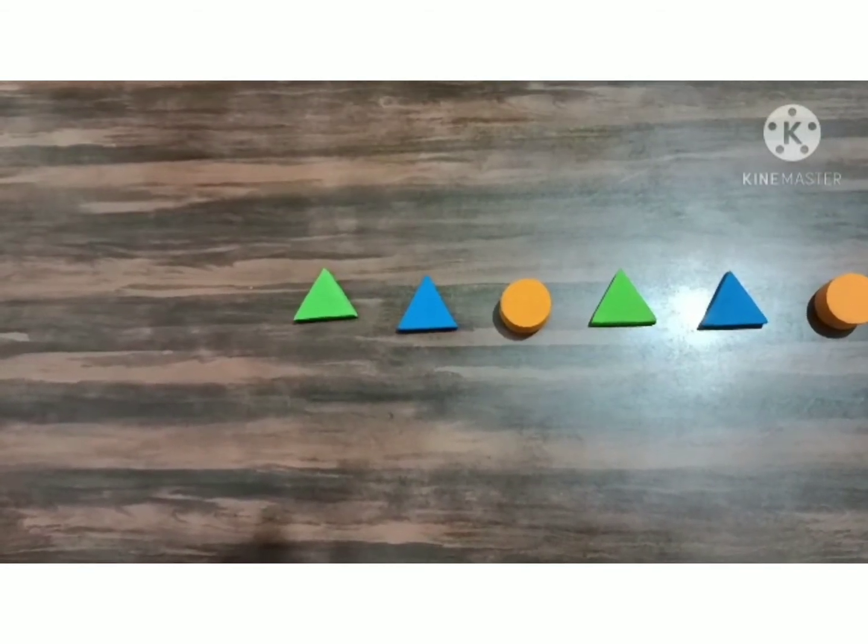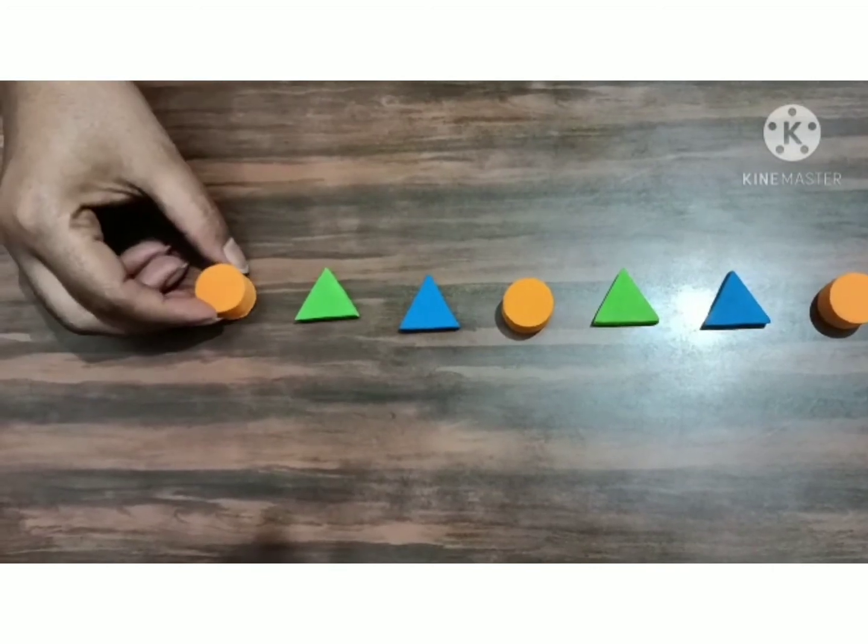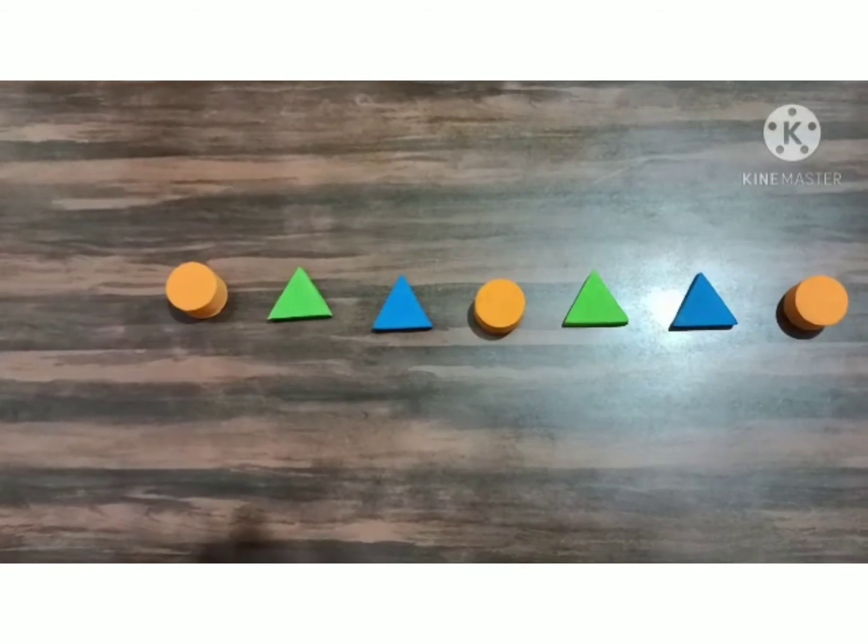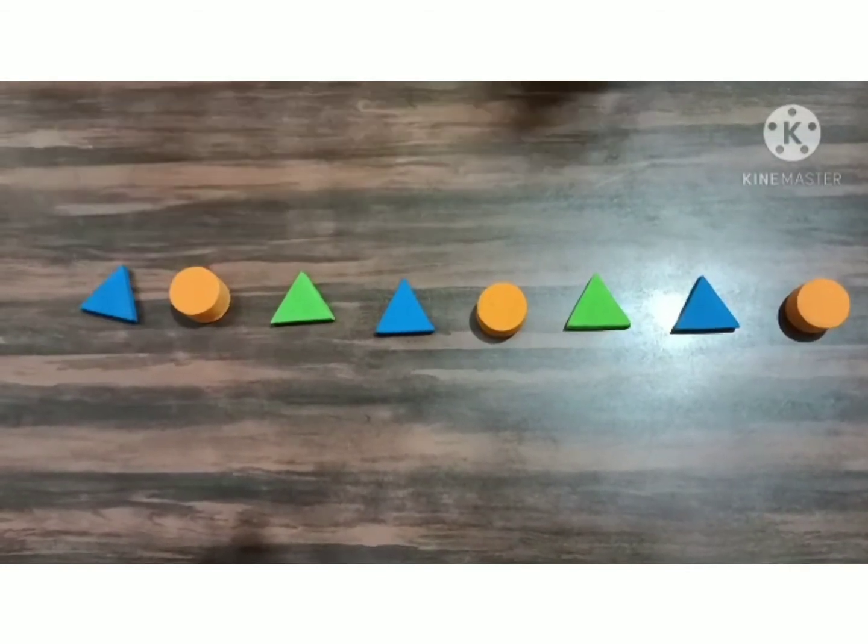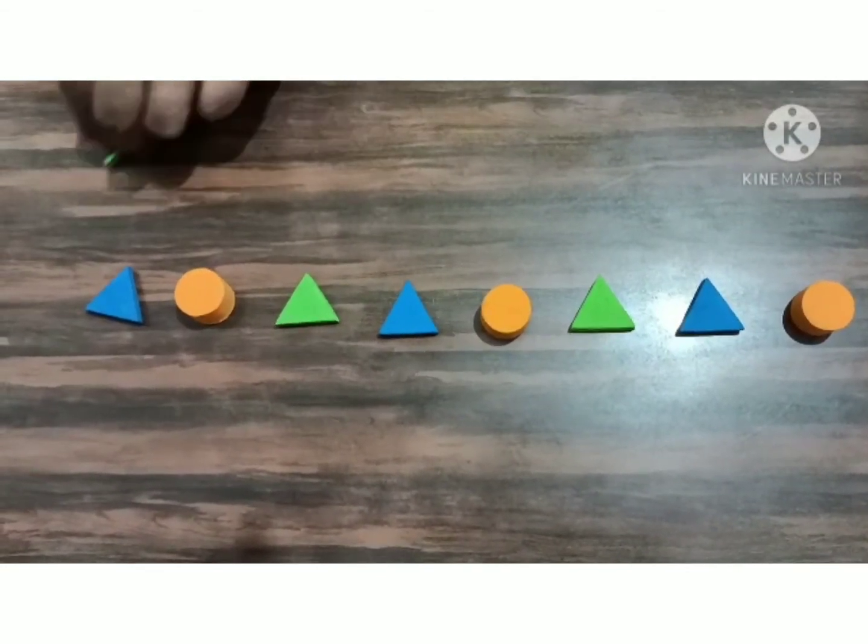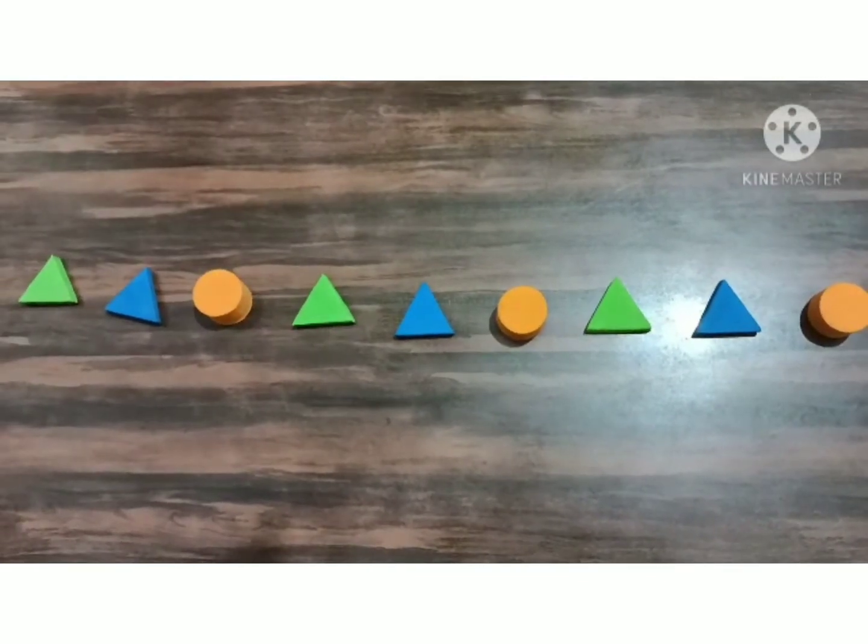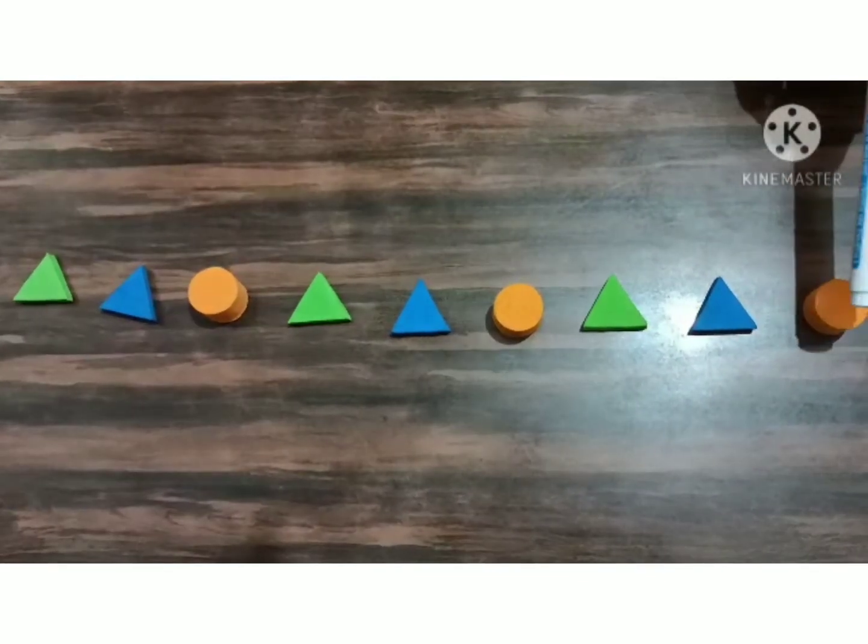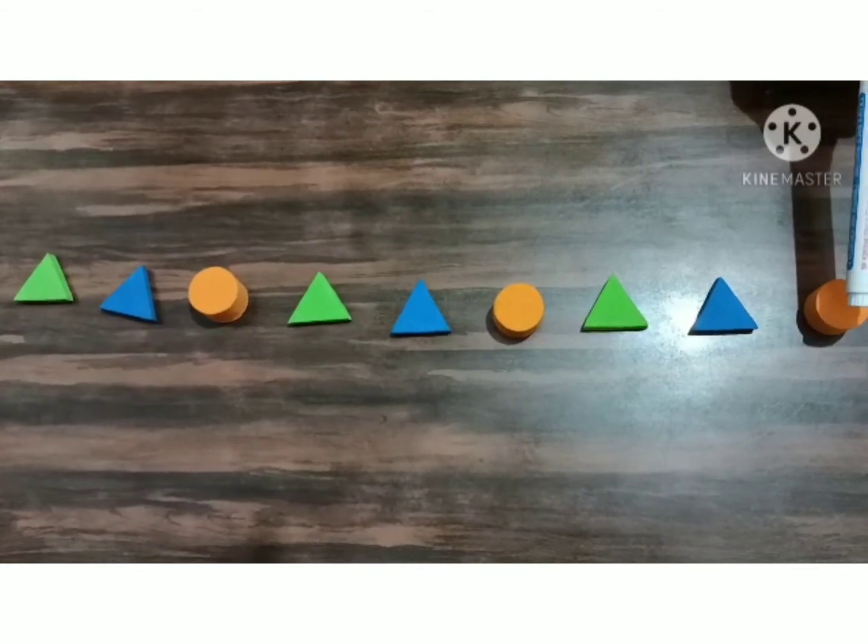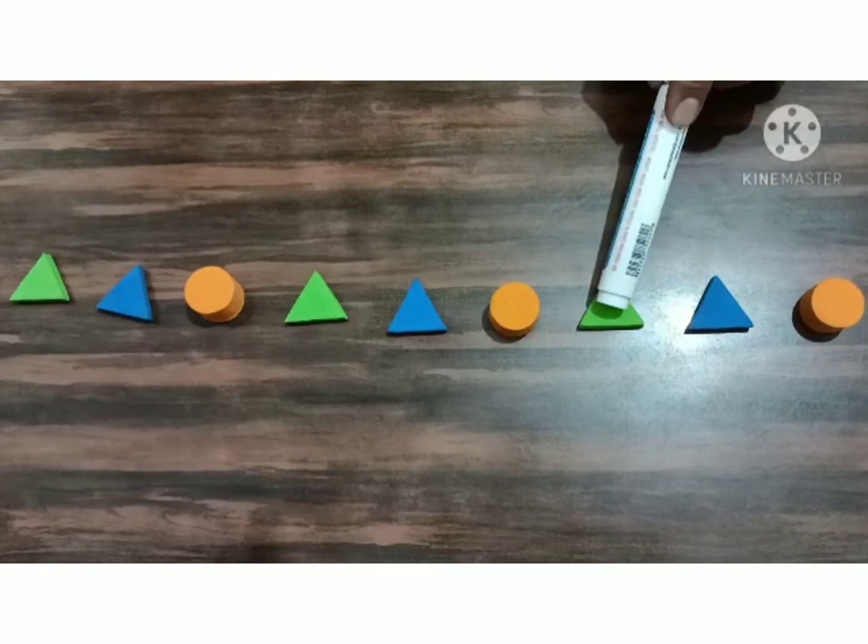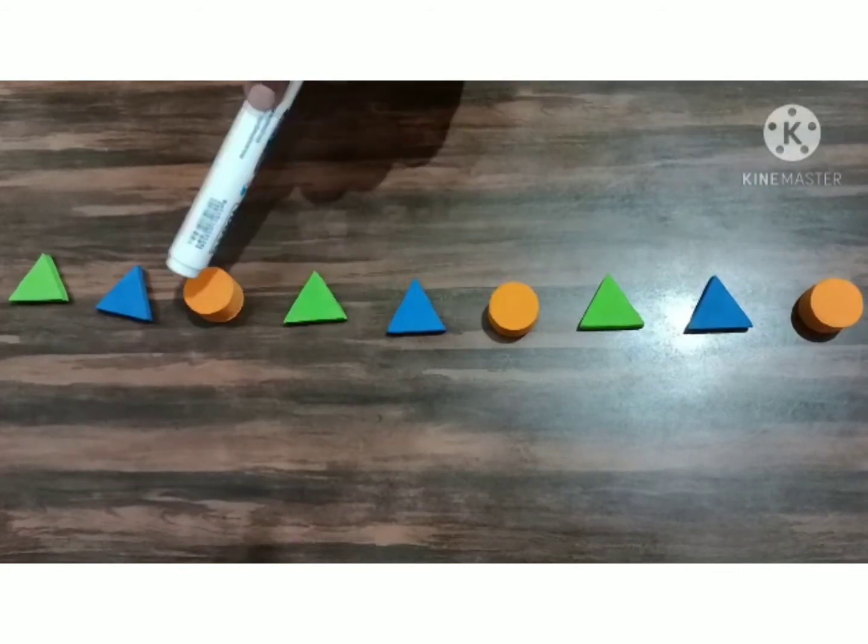And again, I am going to keep orange color circle followed by blue color triangle and green color triangle. Again, you can see that these three are making a pattern. Orange circle, blue triangle and green triangle are repeated again and again.